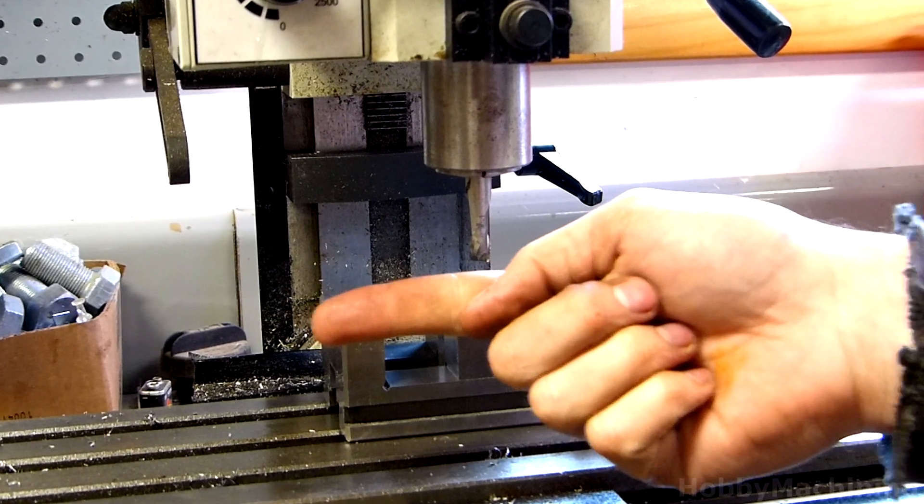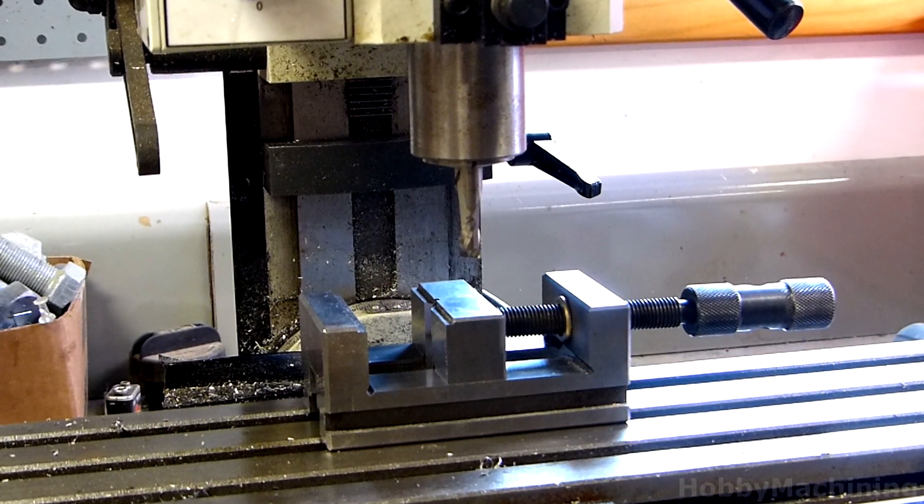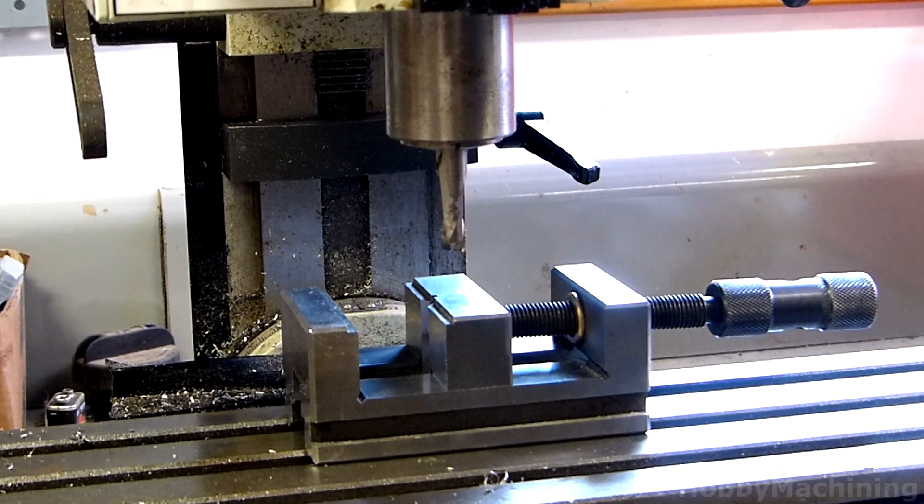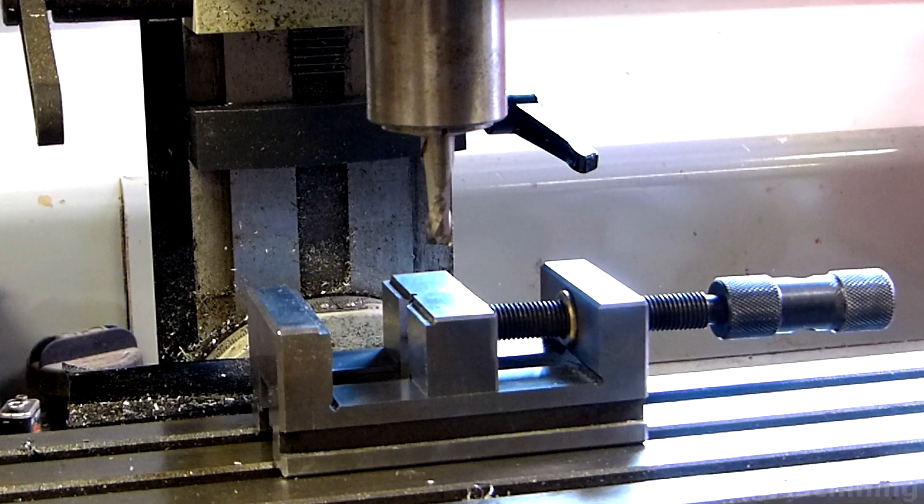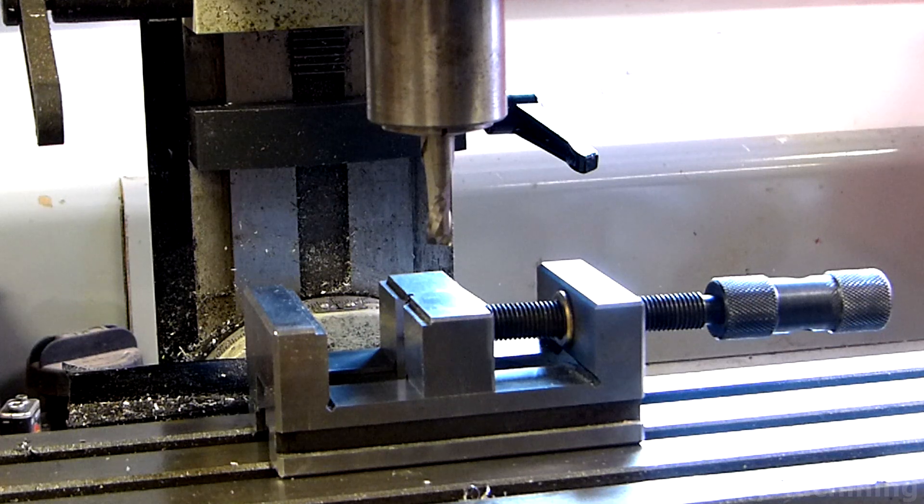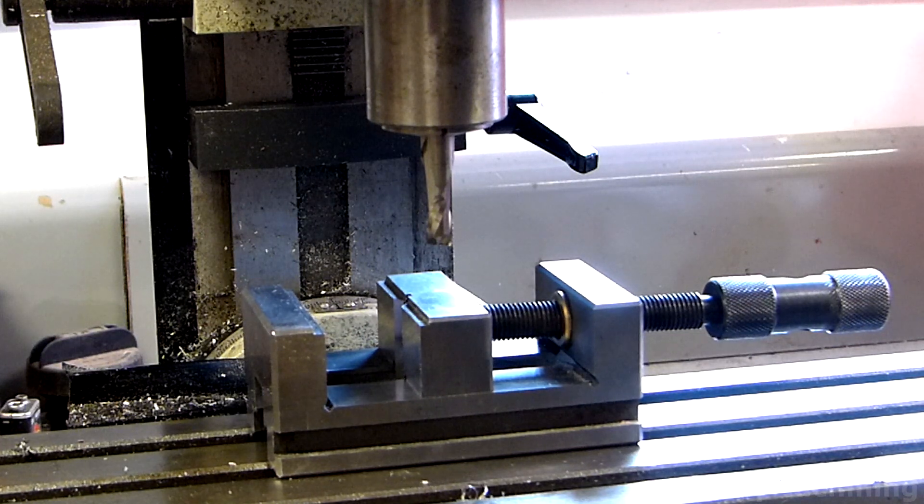The same concept goes for milling. If you want your readings to be accurate in that direction, first you move in the opposite direction, and then reverse to take up the backlash, and at that point you can make your cuts.